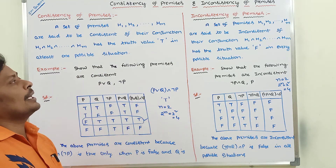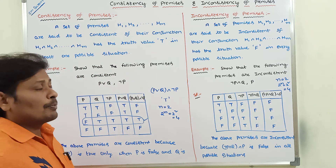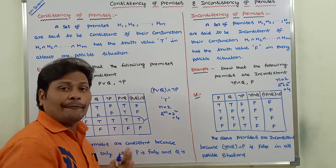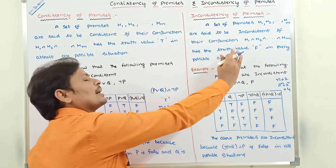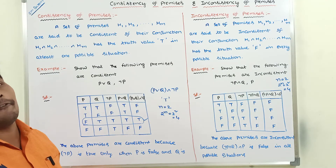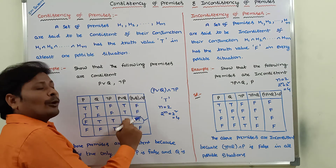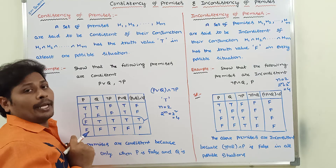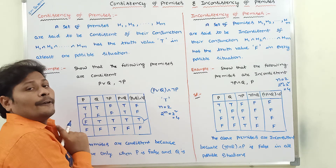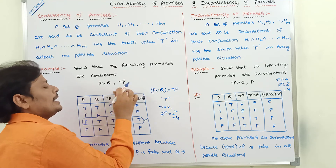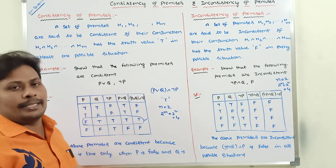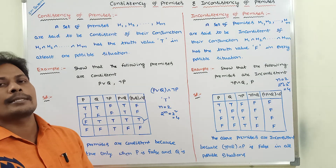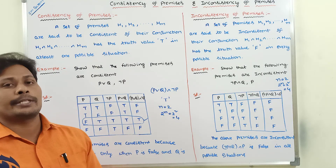That is the difference between consistency and inconsistency. Among all four possible situations, if the conjunction of the two premises contains only false value, then the premises are said to be inconsistent. If among all four possible situations it contains at least one truth value of true, then we say the premises are said to be consistent. I hope all of you understand the differences between consistency and inconsistency of premises using the truth table method.